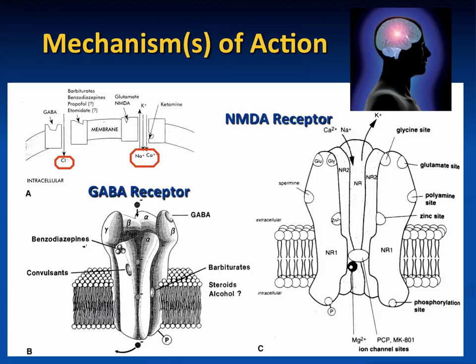The mechanism of action of IV induction agents: barbiturates, benzodiazepines, propofol, and etomidate all act at the GABA receptor, facilitating chloride conductance such that a negative anion increases intracellularly, making that neuron farther from firing threshold. The GABA receptor is complex with multiple subunits, and our drugs act at different portions of it. The NMDA receptor is where ketamine acts — it has a blocking effect, reducing sodium and calcium influx and blocking an excitatory effect. Most of our drugs act at the GABA receptor; ketamine acts at the NMDA receptor.